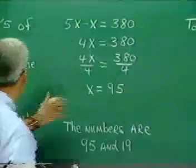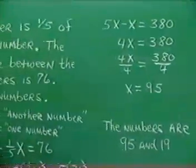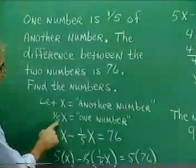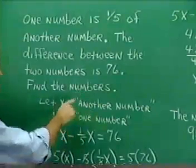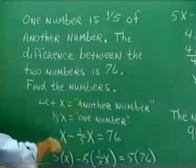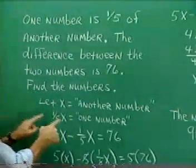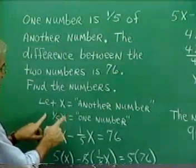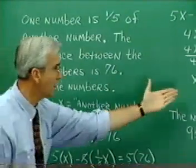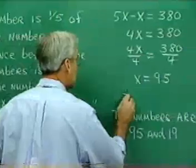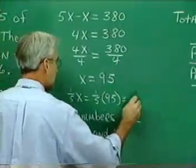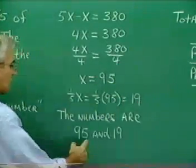Now back here we represented the two numbers. We said let x be this thing called another number. But the other number in this problem is one-fifth x. Now that's the value. We have a mathematical representation of that other number that we're after, and so we can use that representation in order to calculate it. So one-fifth x means one-fifth of 95, and that turns out to be 19. So the two numbers are 95 and 19.